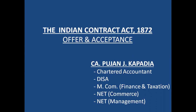Friends, as you all are very well aware, we had started with the Act — the Indian Contract Act 1872 — under which we have covered several topics, starting from the basic definitions, then the topic of what is a valid contract, and what all are the essential elements of the valid contract.